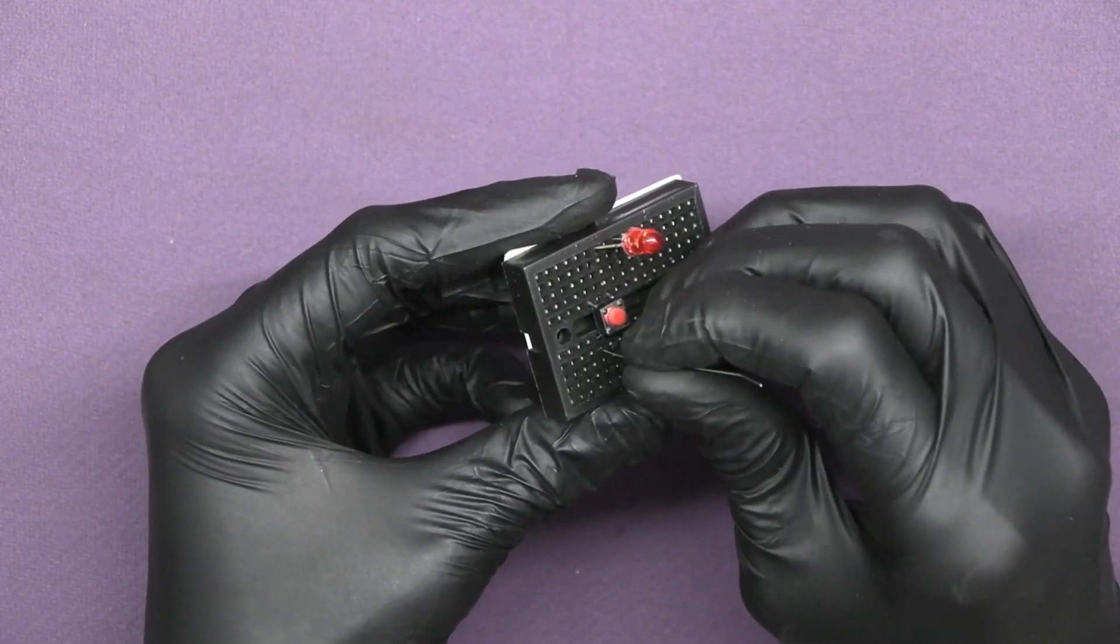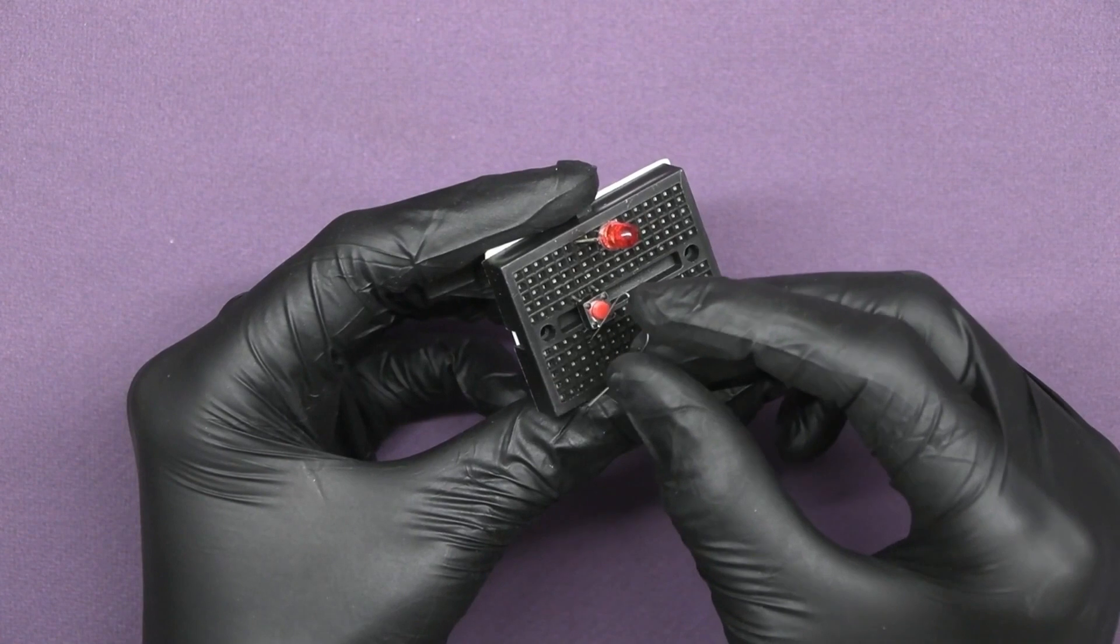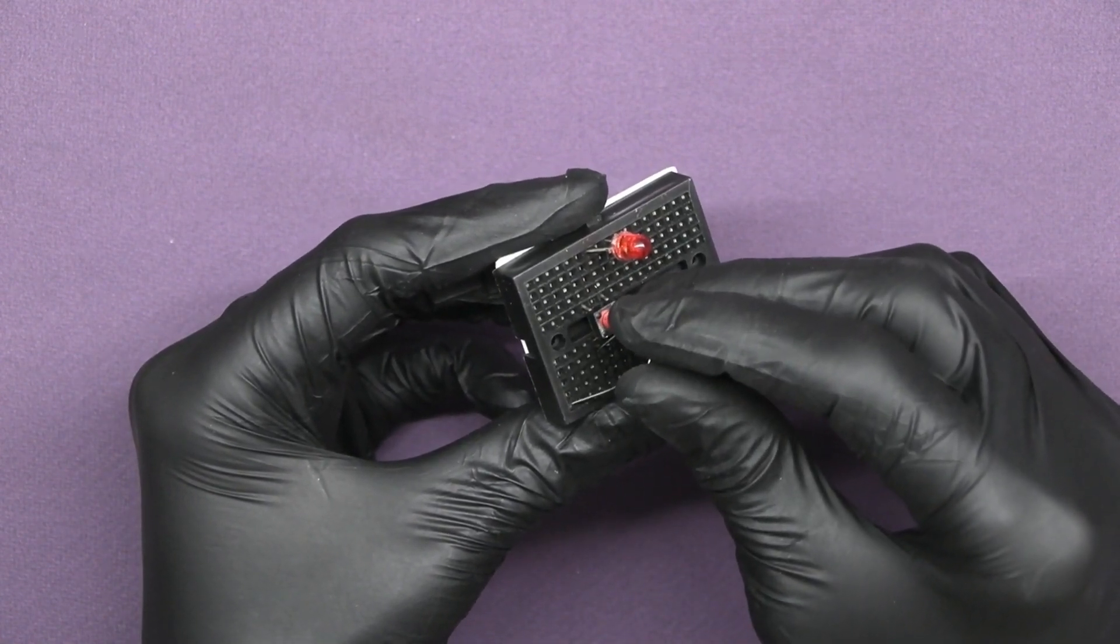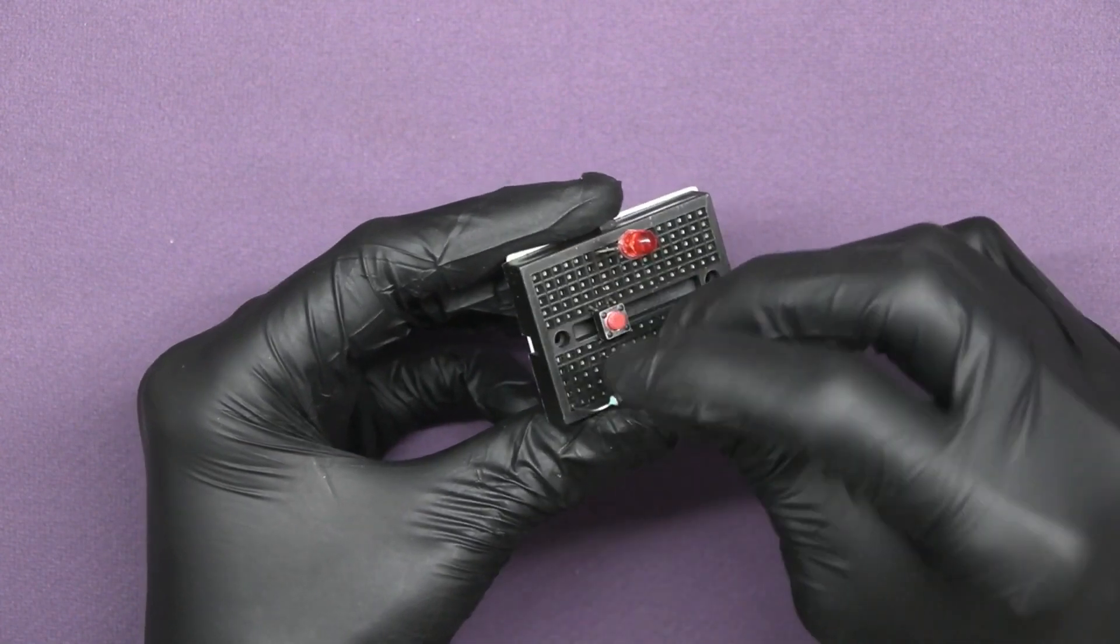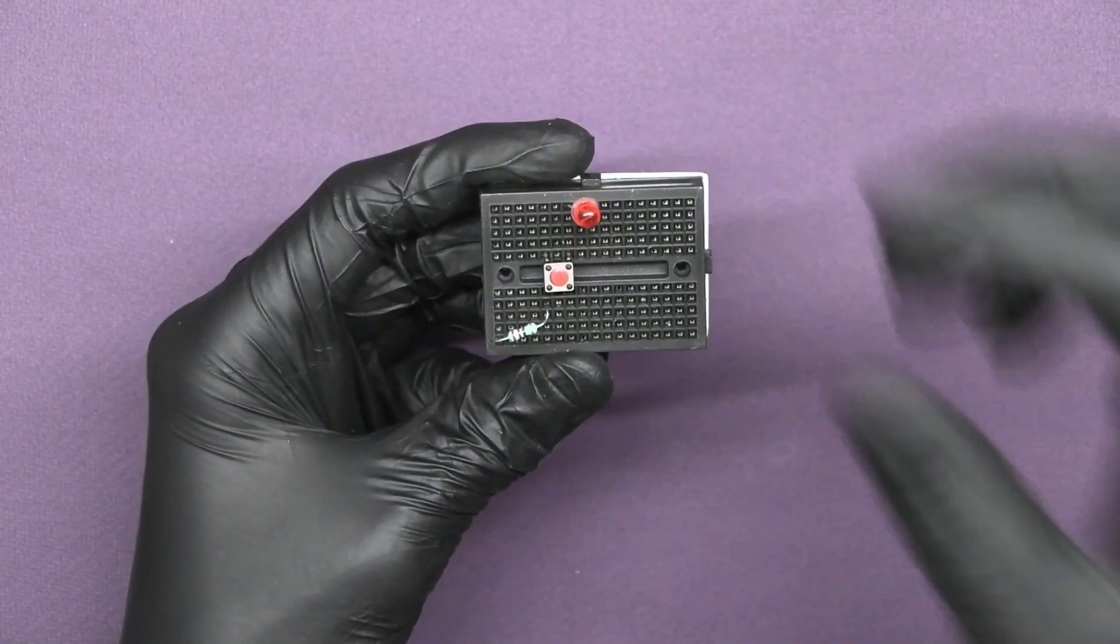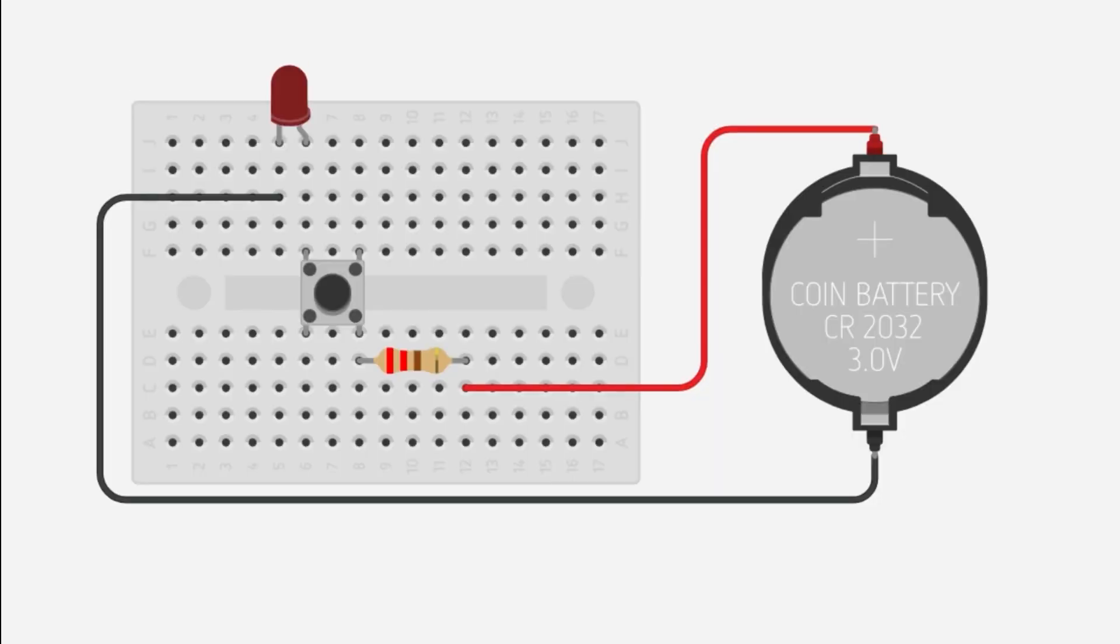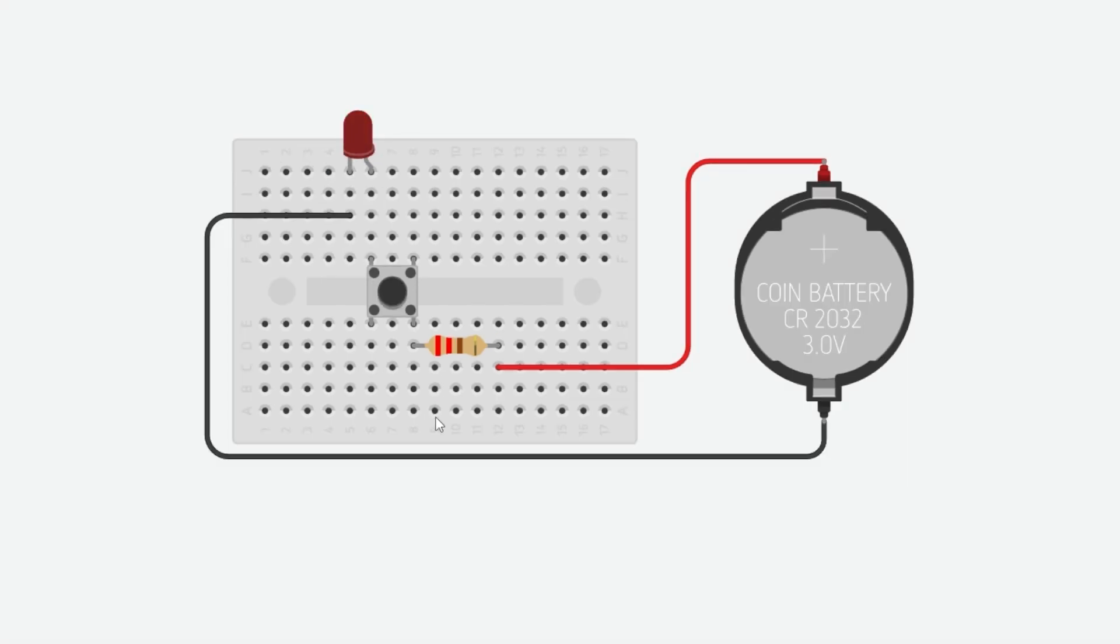Here we use a 220 ohm resistor which prevent our LED to any damage. You can make the circuit according to this diagram where the LED is connected in two different lines in the breadboard.